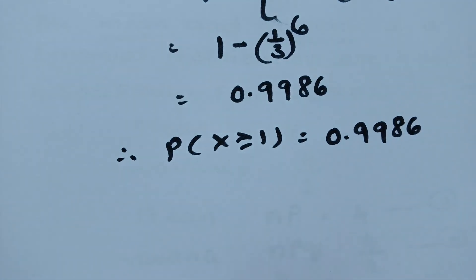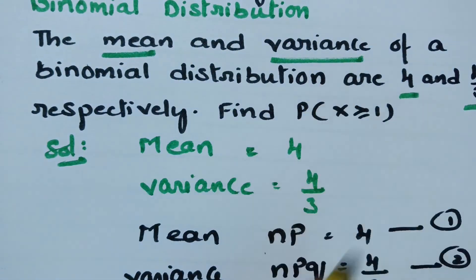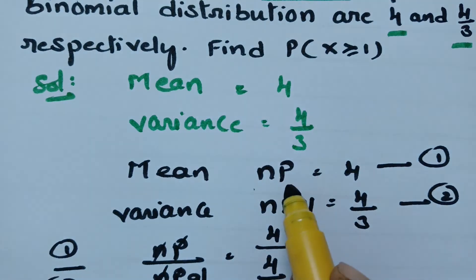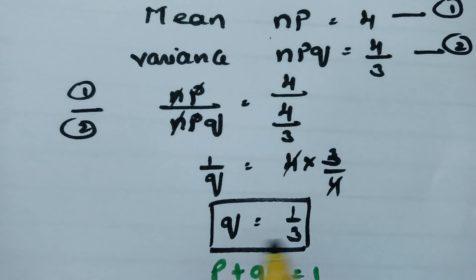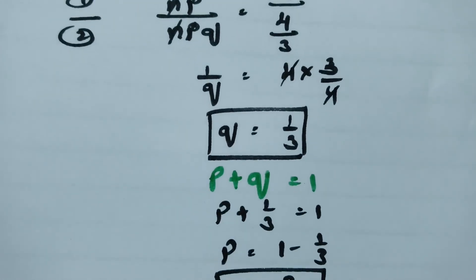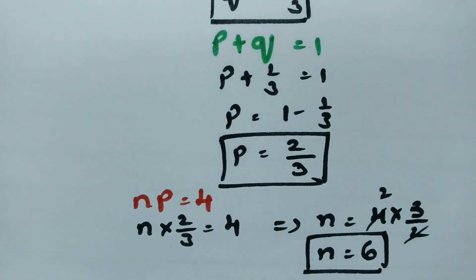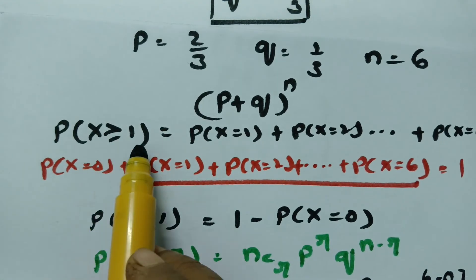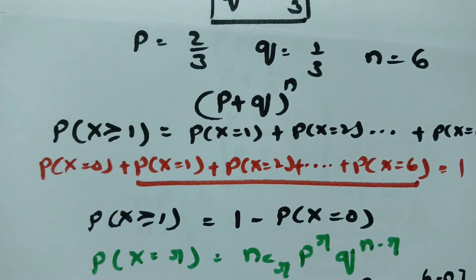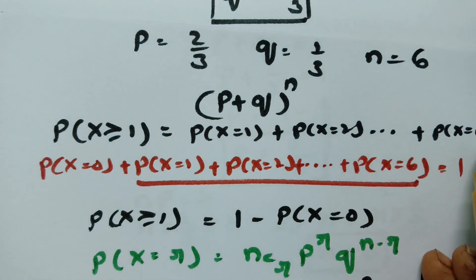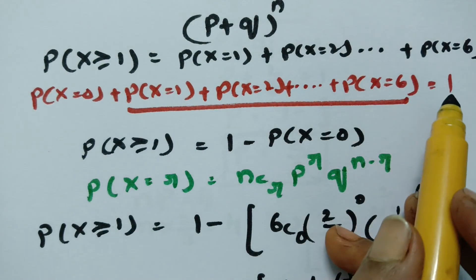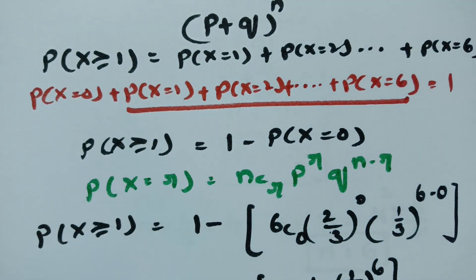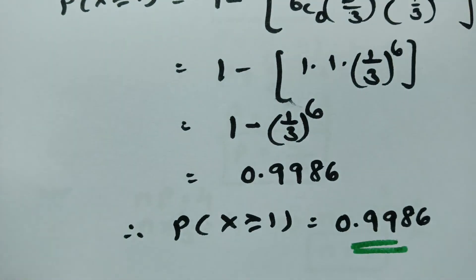This is how we calculate. When mean and variance are given, remember that mean μ = np and variance = npq. After dividing, I got the value of q, then calculated p, and also n = 6. To find P(X ≥ 1), instead of calculating from x = 1 to 6, subtract P(X = 0) from 1 to get the final answer. Thank you so much.